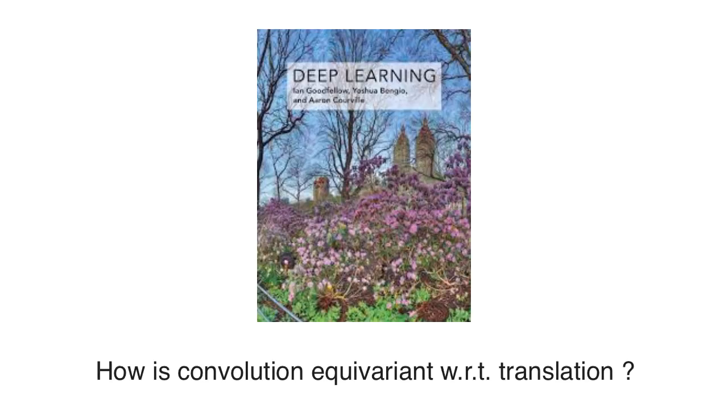Say I give you the deep learning book along with the question, how is convolution equivariant with respect to translation? What would you do to answer this question?